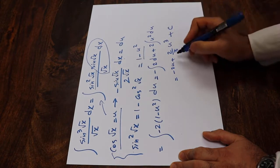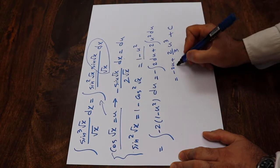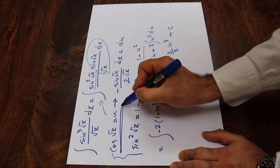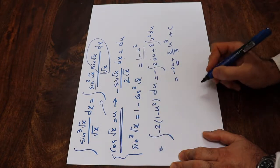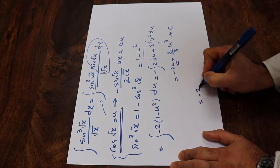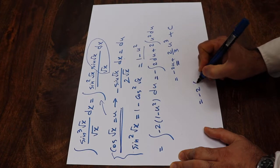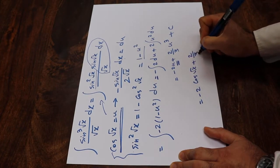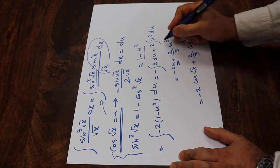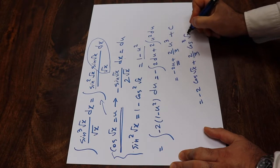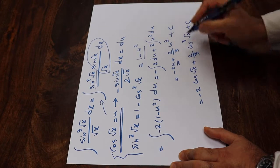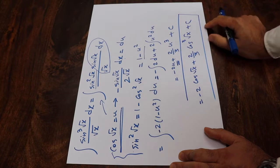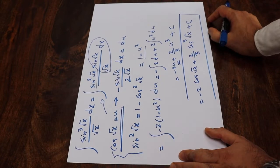So all you need to do is substitute u back with its definition, which is cosine of square root of x. This gives minus 2 cosine of square root of x plus two-thirds cosine cubed of square root of x plus C, which is the constant of integration. And this is the solution to our integral.